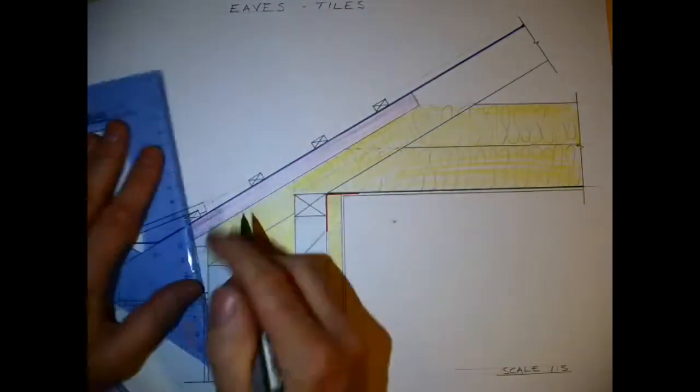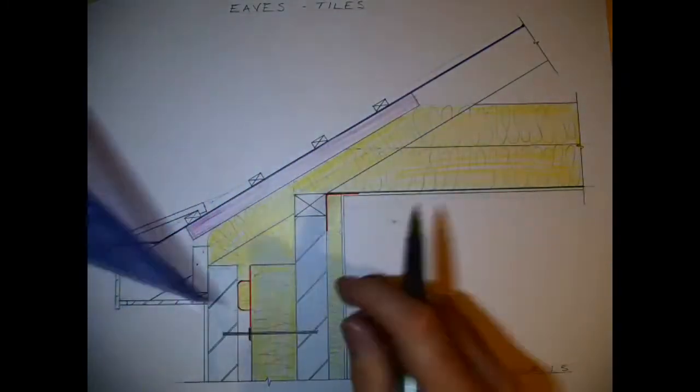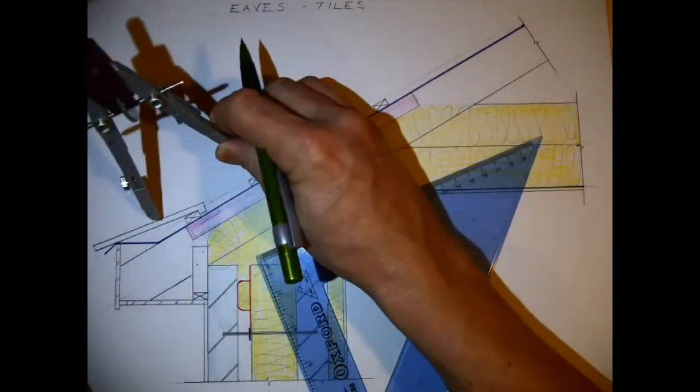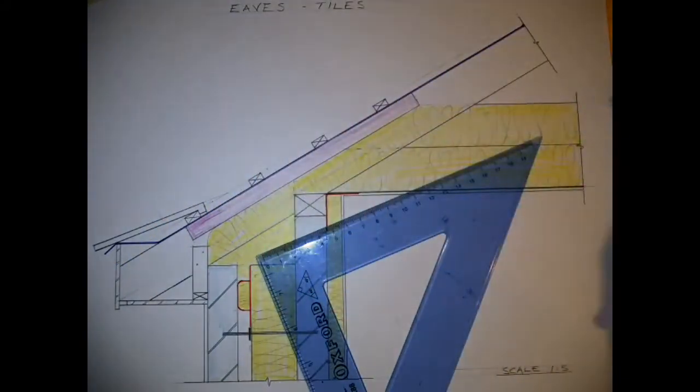The overhang that I have here of the tile running over the edge of the fascia is allowing for a 60 millimeter overhang.